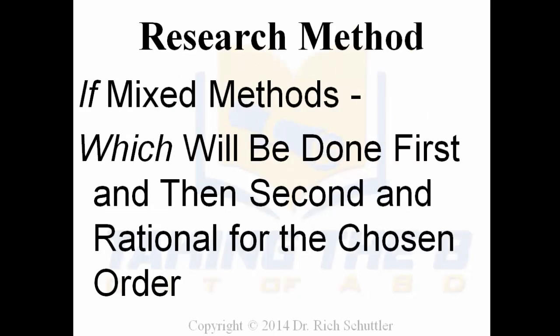In regards to the mixed method study, if you're going to do one, you'll have to describe which will be done first and then second, and the rationale for choosing the order. For example, I did a mixed method study with 12 Likert-type questions and three open-ended questions given to the survey population. I addressed that I did the quantitative part first, how I developed the questions, and why. Then I included how I created the open-ended questions – one for each independent variable related to the quantitative side – and explained my rationale for choosing that order.